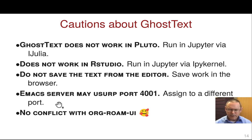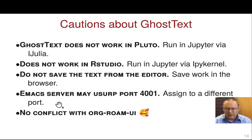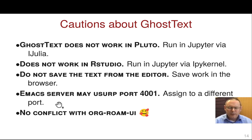Some precautions: Ghost Text doesn't work with Pluto, which is a new computational notebook for working with Julia. My suggestion would be to just run iJulia in Jupyter. It also doesn't work with RStudio, even though RStudio sort of resembles a web browser. You can always run R using the IPI kernel as you've just seen. Also, if you use the Emacs server, you may run into issues with the server competing on port 4001, so you should configure the Emacs server to use a specific port. So far I haven't found any conflicts with the Org-roam user interface.